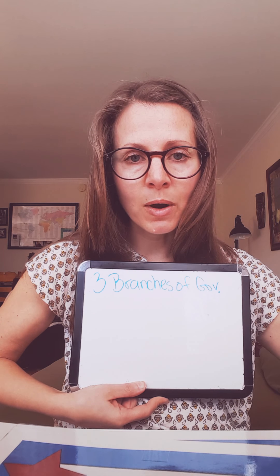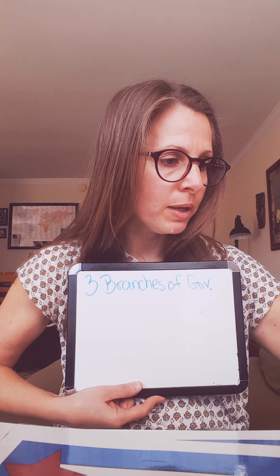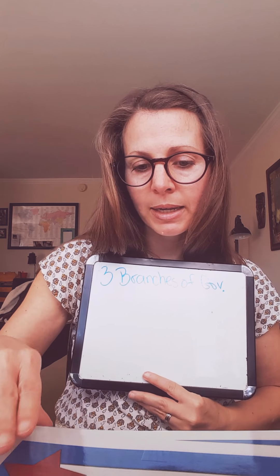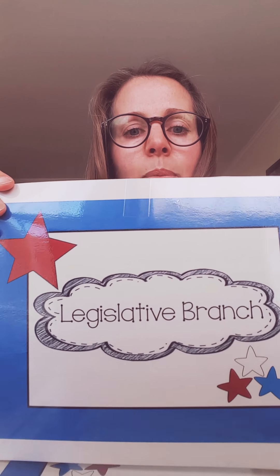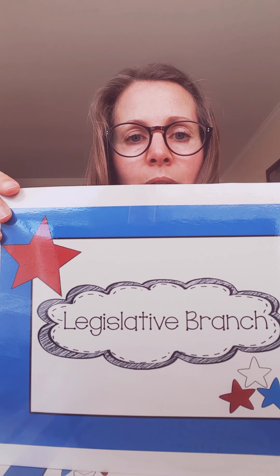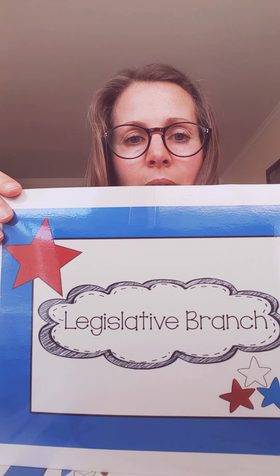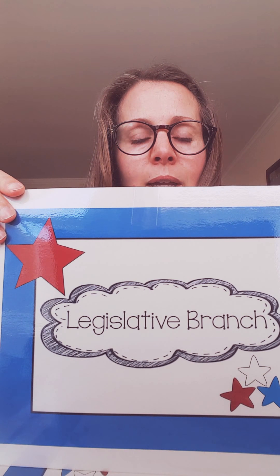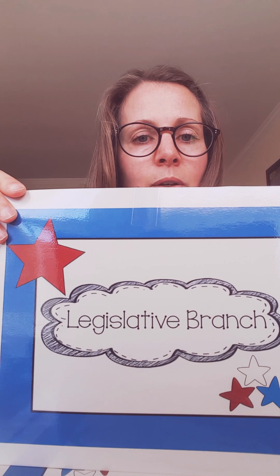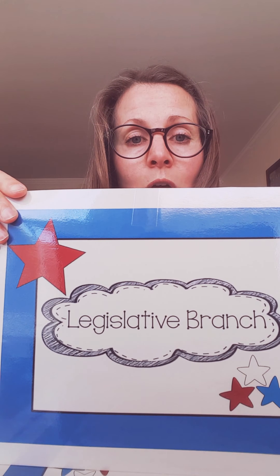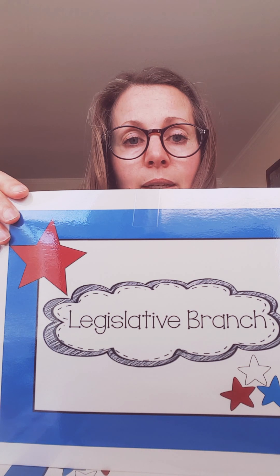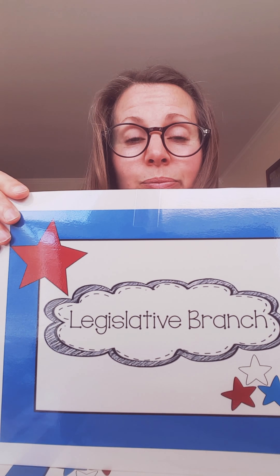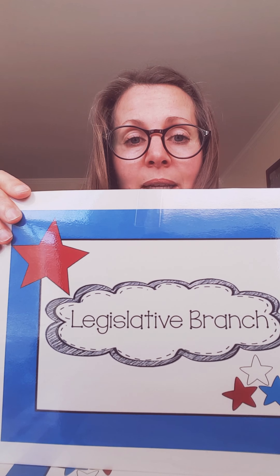So if you are ready, let's start with the branch of government that makes our laws, and that is the legislative branch. Here's how you spell it. So the legislative branch will get its own page in your notebook. At the top, you're going to write 'legislative branch,' and all you're going to write is that they make the laws. That's the key role — the legislative branch makes the laws.